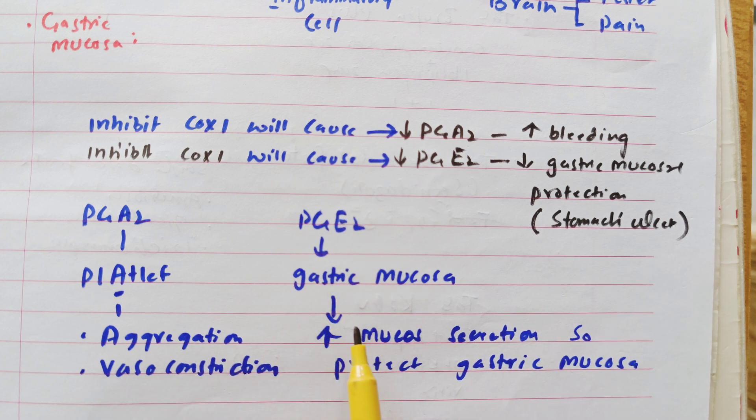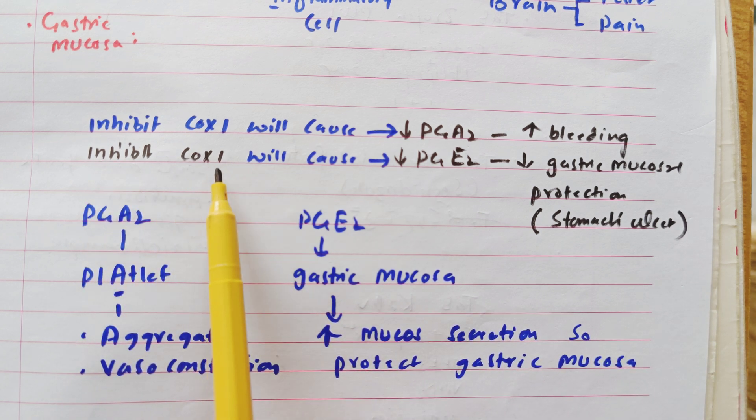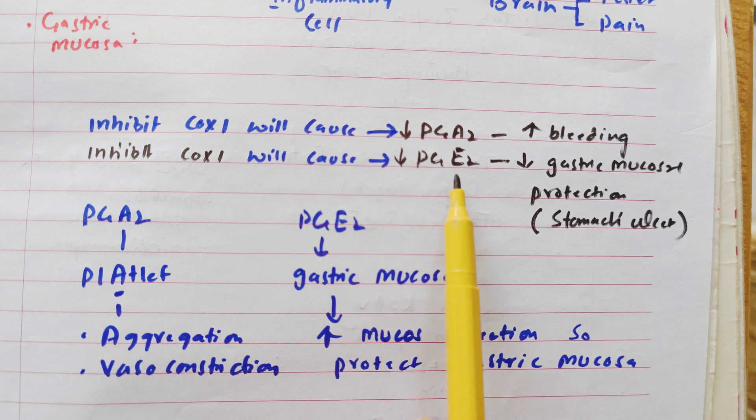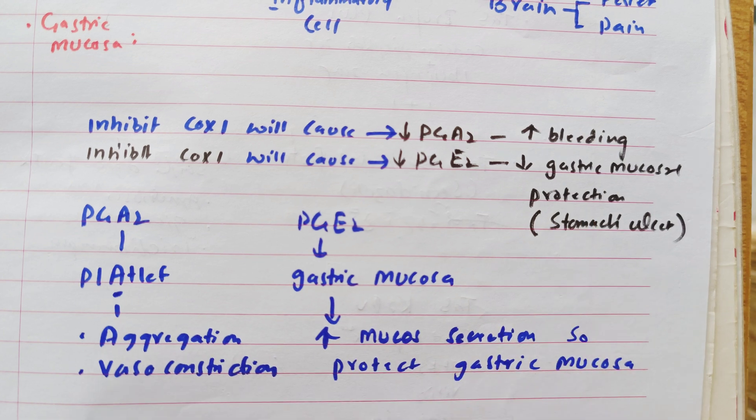Now prostaglandin E2 is produced by gastric mucosa which increases the mucus secretion and the mucus is going to protect the gastric mucosa. If you inhibit the COX-1, there will be decrease in prostaglandin E2 formation. There will be decrease in gastric mucosal secretion. So gastric mucosa protection will decrease and stomach ulcer will occur.